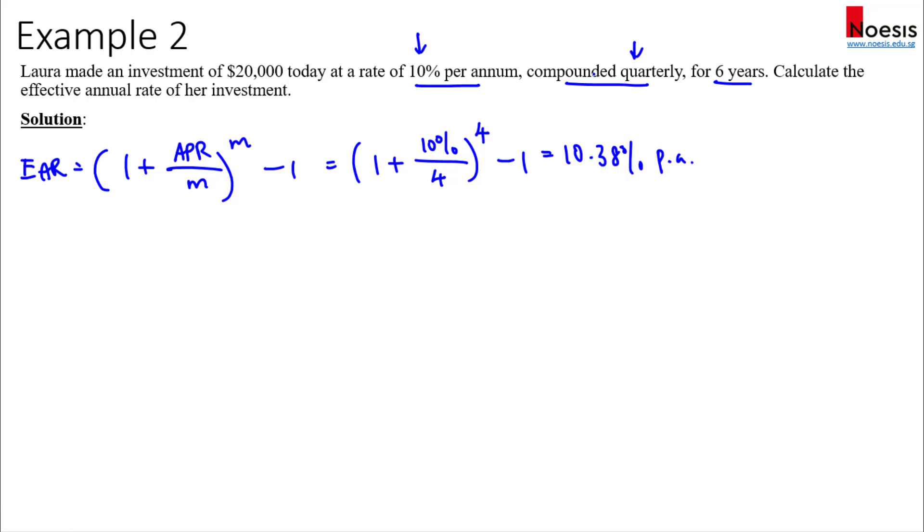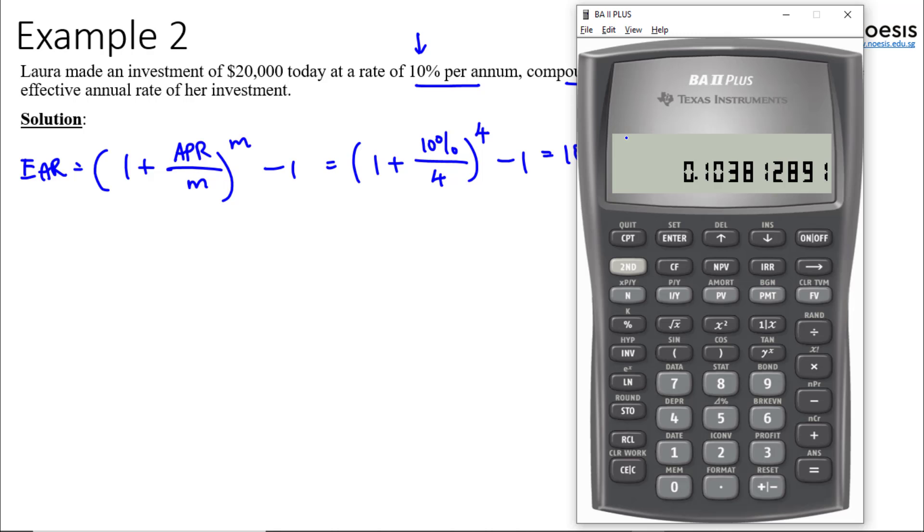Now of course the calculator has a built-in function that you can use to compute EAR. To get to that built-in function you'll press 2nd and 2 to get into the interest conversion function.